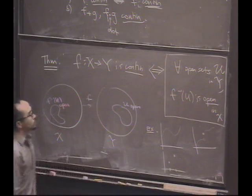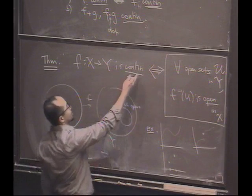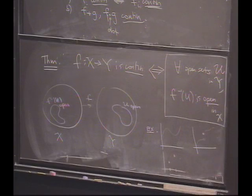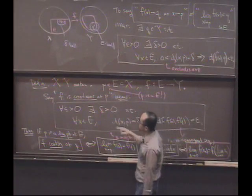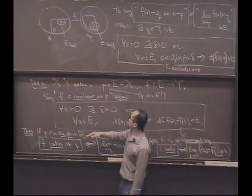We're saying the function is continuous if, oh, by the way, what do I mean continuous? I mean continuous everywhere because I haven't specified the point. If you want to talk about continuity of a function at a point, it's this definition. If you want to talk about continuity without reference to a point, it means it better be true for all points.